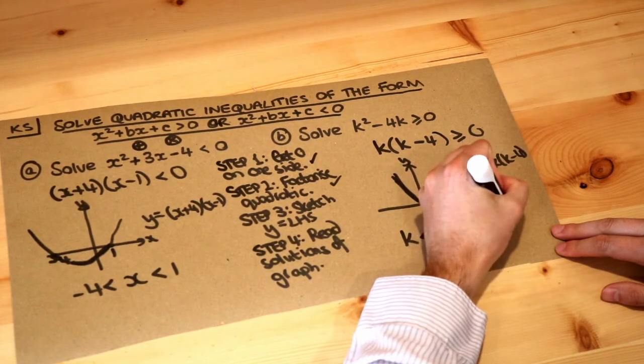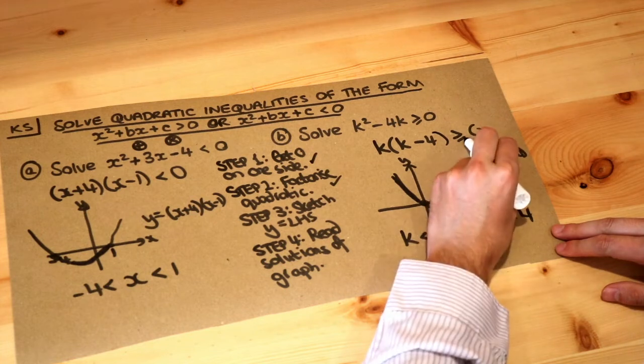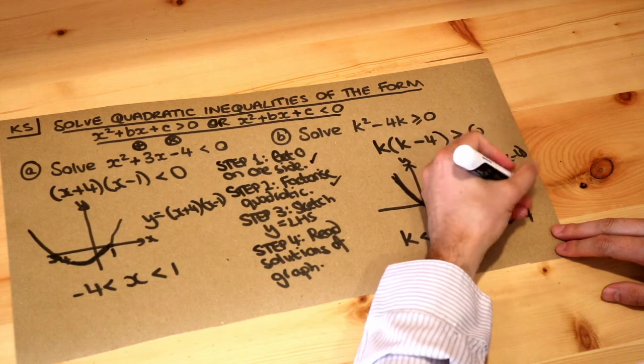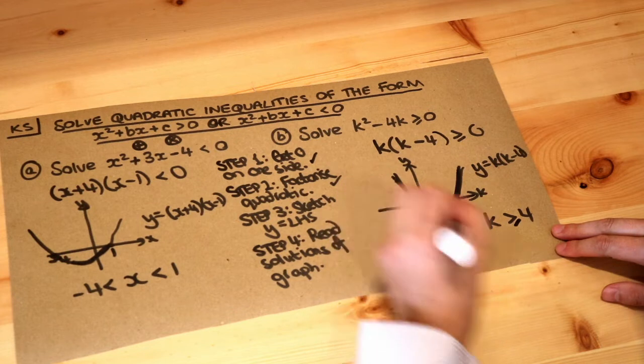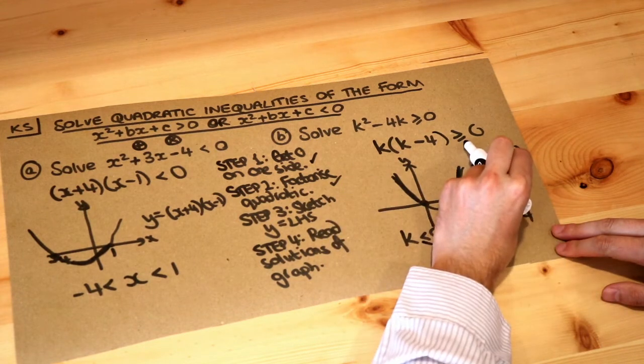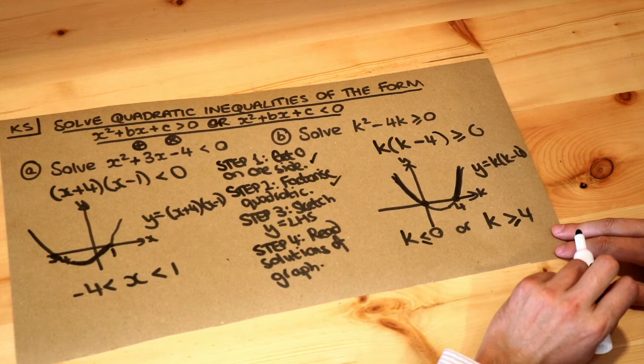Now I've made a slight mistake here actually, because I said this symbol should be consistent with that. So if that's greater equal to, this should be greater equal to, and that should be less than or equal to. So if that's a non-strict inequality as we call it, then these again should be non-strict.